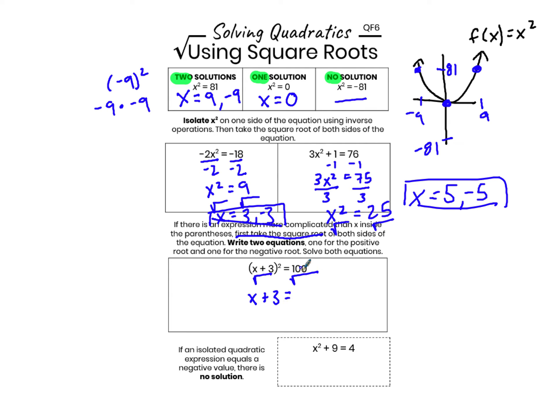When I take the square root of 100, I need to remember that there are two solutions. I have both 10 and negative 10, which sometimes we write as plus or minus 10.